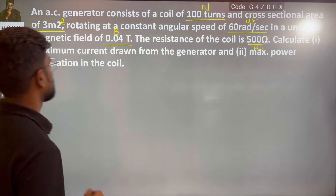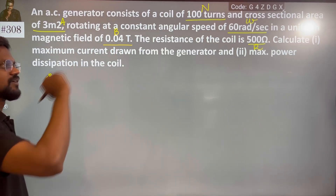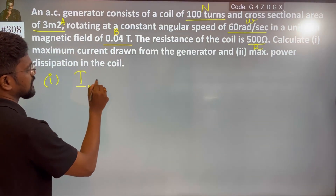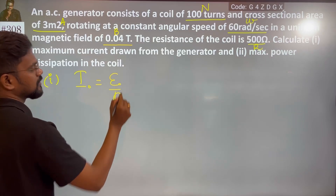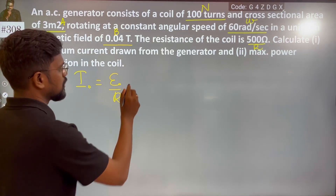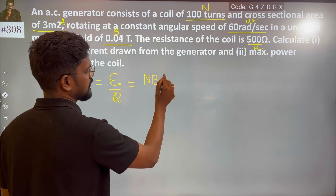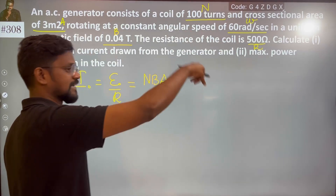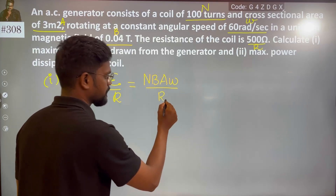What is your maximum current? Generally, current equals EMF divided by R. EMF equals N·B·A·ω·sin θ, and at θ = 90 degrees, sin θ becomes 1, upon R.